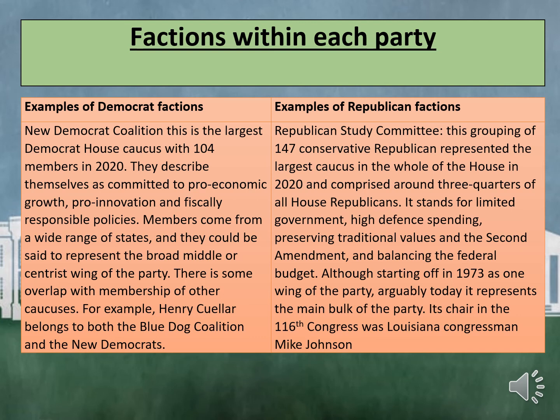The Republican Study Committee is yet another Republican faction. This grouping of 147 conservative Republicans represented the largest caucus in the whole of the House in 2020, comprising around three quarters of all House Republicans. It stands for limited government, high defence spending, preserving traditional values and the Second Amendment, as well as balancing the federal budget. Although starting off in 1973 as one wing of the party, arguably today it represents the main bulk of the party. Its chair in the 116th Congress was Louisiana Congressman Mike Johnson.